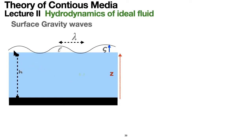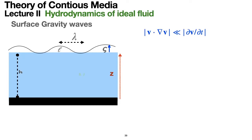On the surface of the liquid, we have a wavy structure characterized by a typical height L — the elevation of the surface from the equilibrium position when the sea is calm and the water is flat. The characteristic length over which this elevation changes along the X axis I shall denote as lambda.